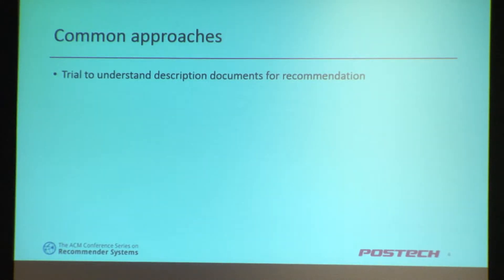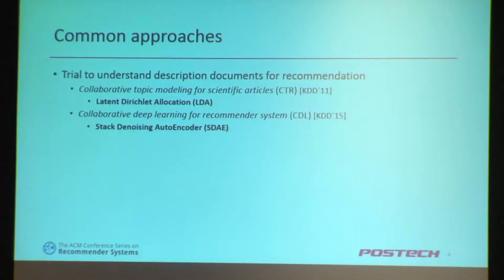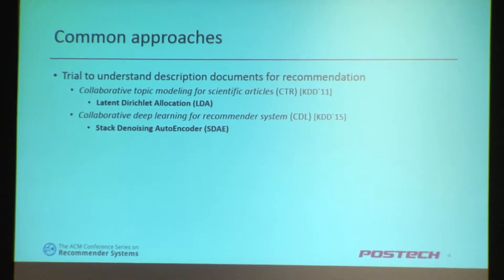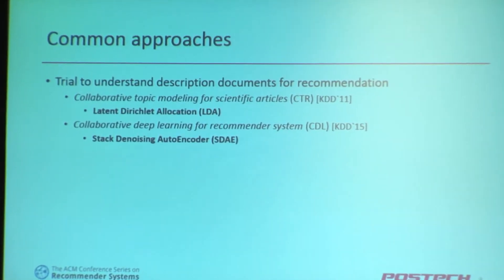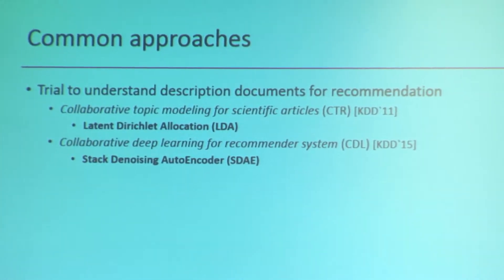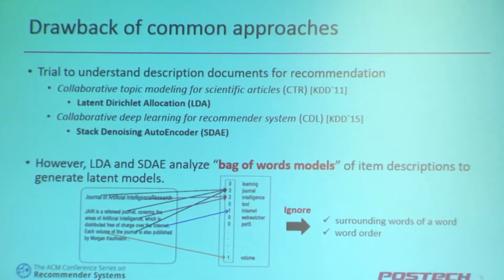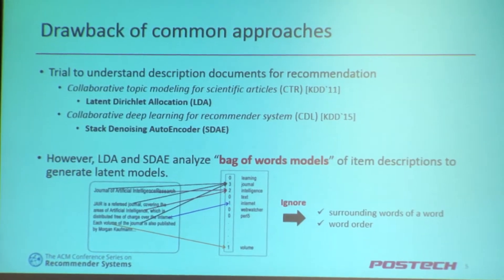As a research trial to understand description documents for recommendation, collaborative topic modeling was introduced at KDD 2011 using LDA. Inspired by that work, collaborative deep learning was introduced at KDD 2015 using a Stacked Denoising Autoencoder. However, these models still use bag-of-words representations of item descriptions. So the question is: are they sufficient to analyze description documents — is it OK to ignore surrounding words and word order? The answer is no.